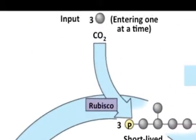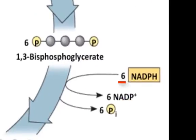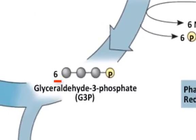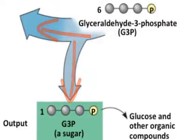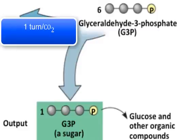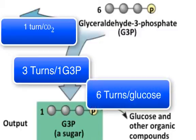Three CO2 go into the cycle. Six ATP are needed to phosphorylize that, and six NADPHs to reduce, to get six G3P molecules. One G3P is extra, as five more G3P need to go back into the cycle to keep it going. So one turn of the cycle for each CO2, three turns of the cycle for one G3P, and six turns of the cycle for one glucose molecule.